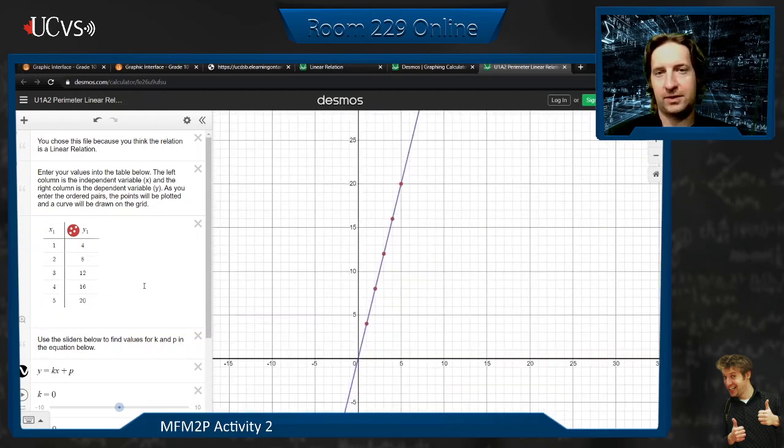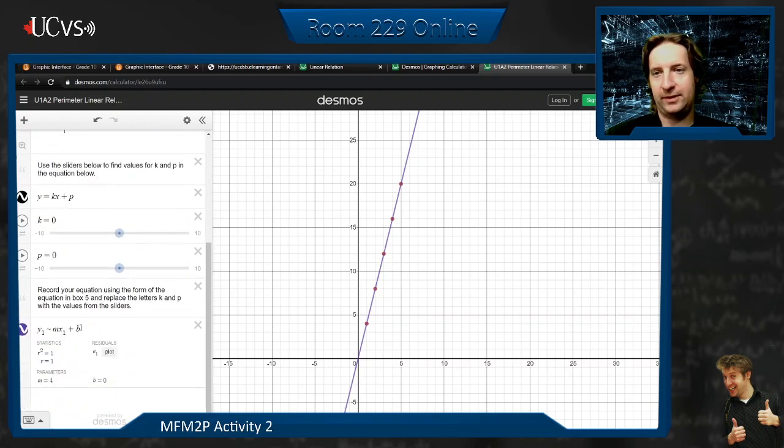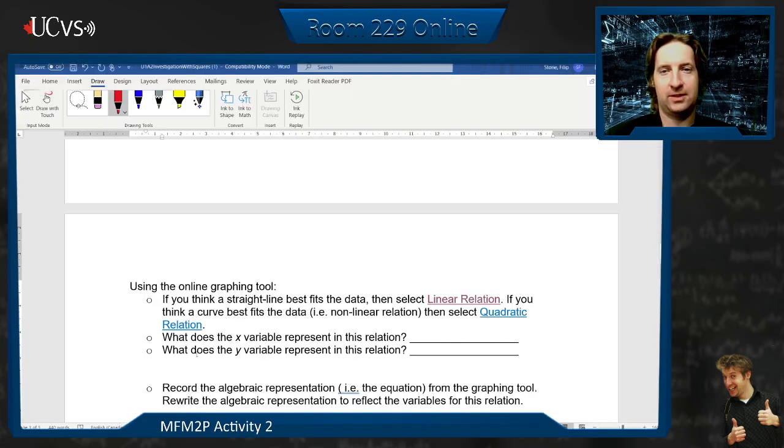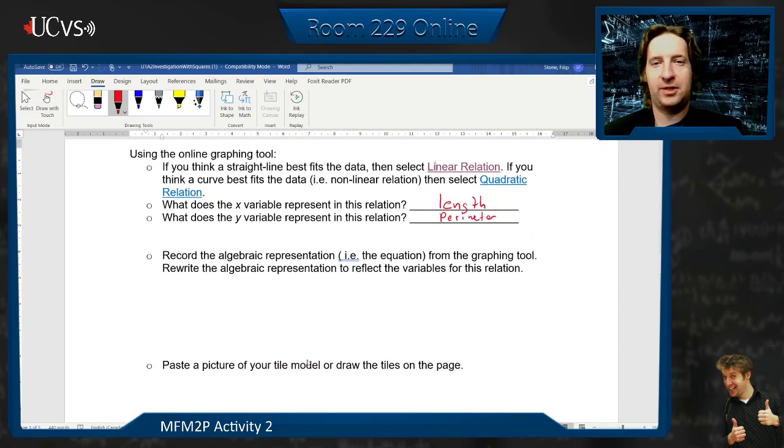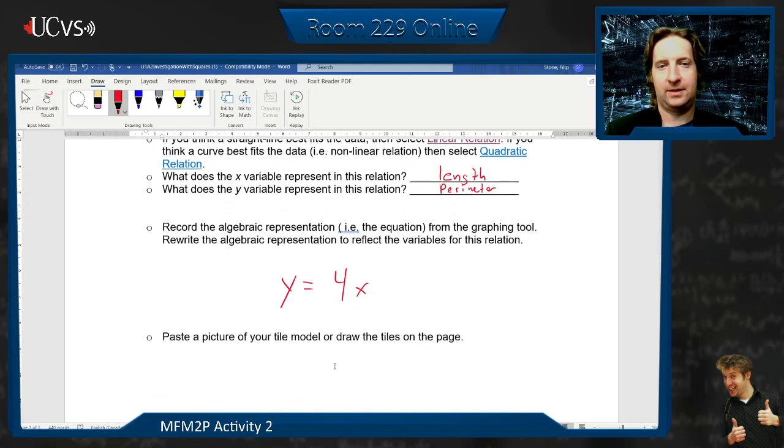And if you scroll down, it actually tells us what the equation is. It says y equals four x plus zero. So it tells us right away. So the x represented the side lengths. I'm just going to actually go through the first one with you. The y represented the perimeter. And we came up with an algebraic expression that y equals four x. Done. I really don't like that y. Sorry. So y equals four x.